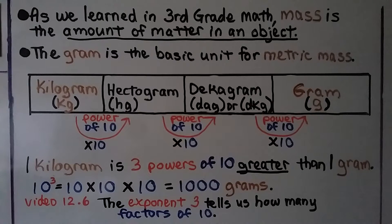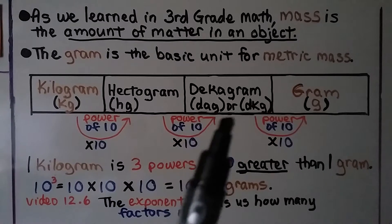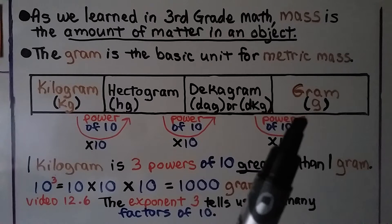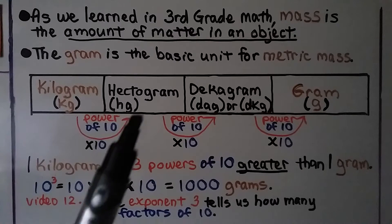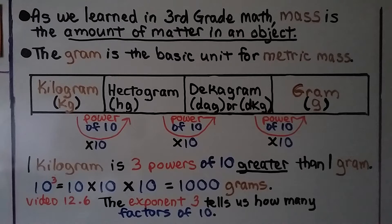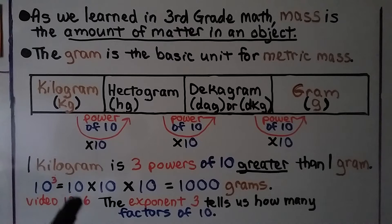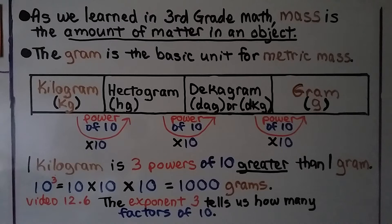As we learned in third grade, mass is the amount of matter in an object, and the gram is the basic unit for metric mass. Looking at the table showing kilograms (kg), hectogram, decagram, and gram (g), as we move toward grams there are three powers of ten. One kilogram is 10 to the third power — ten times ten times ten — equal to one thousand grams.